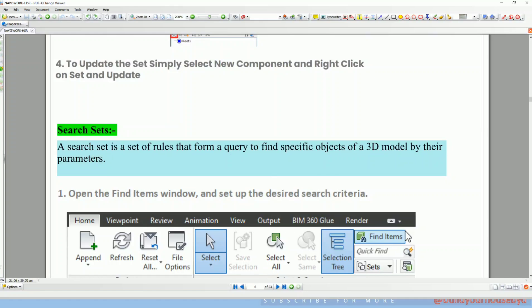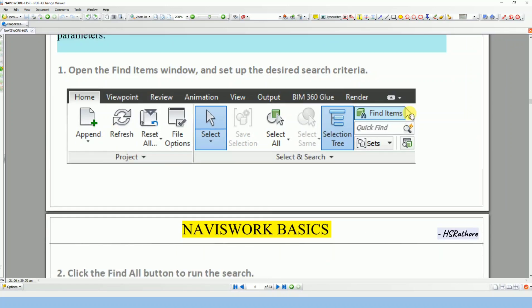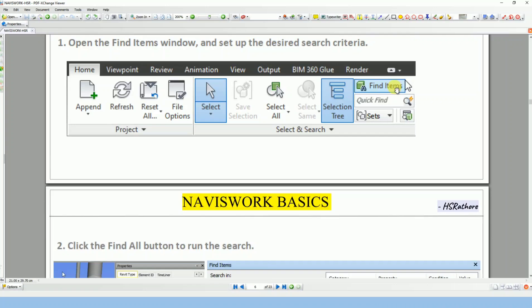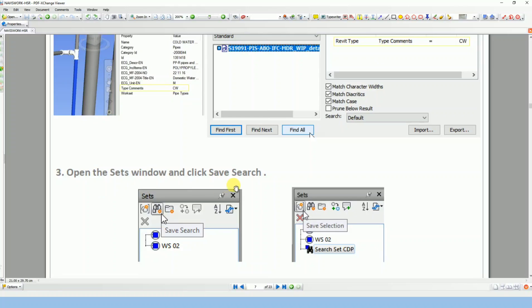This is the basic and major difference between the selection set and the search set. Looking at this comparison table: a selection set is a defined group of objects selected manually. A search set is dynamic, based on specific criteria — for example, a parameter like wall width of 200 mm. If you set a search to find walls with a width of 200 mm, it automatically creates a set for them. So a search set means you search for a specific parameter value of an element and save that selection.